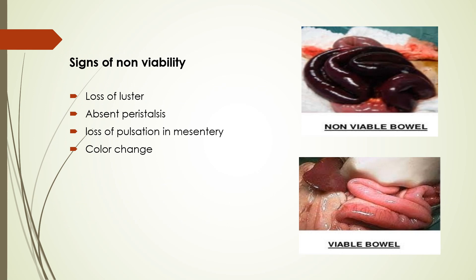Here we can see how a non-viable bowel looks. This bowel does not have luster, it will not have peristalsis, there will be loss of pulsations in the mesentery, and the color of the bowel will change to a blackish-brown color.